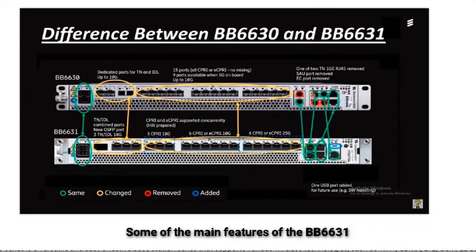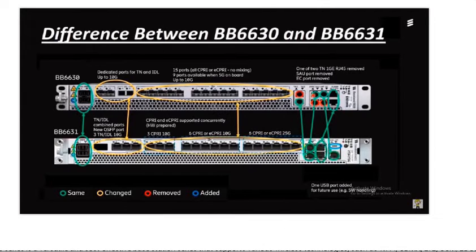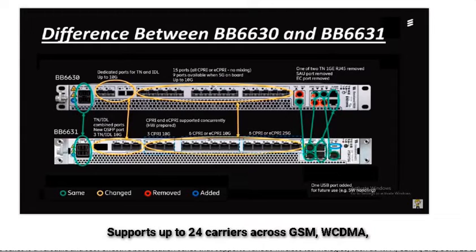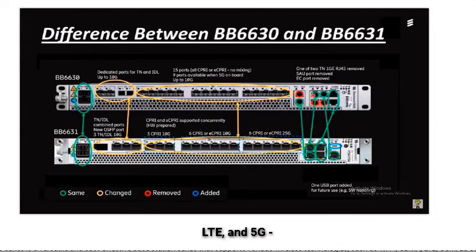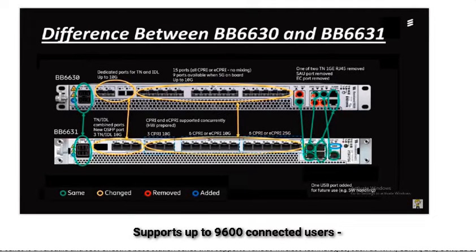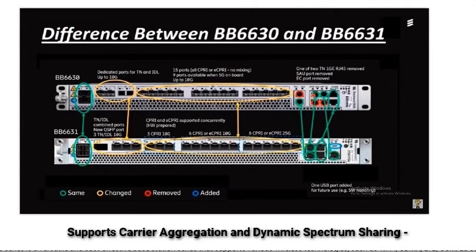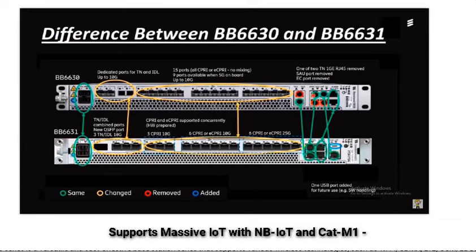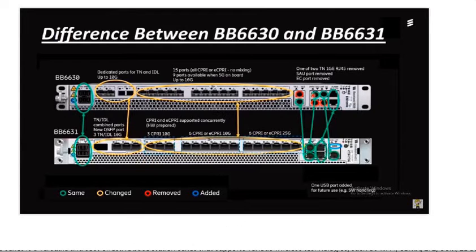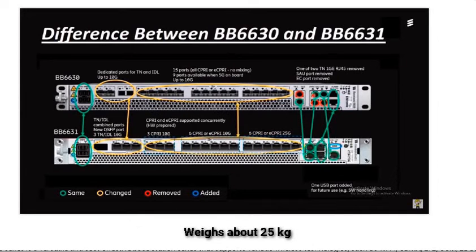Some main features of the BB6631 are: supports up to 24 carriers across GSM, WCDMA, LTE, and 5G; up to 9600 connected users; up to 6 cell carriers per sector; 8x8 MIMO and 1024 QAM; carrier aggregation and dynamic spectrum sharing; massive IoT with NBIOT and CAT M1; up to 600W output power; and weighs about 25 kg.